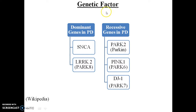In genetic factors, there are two types: dominant genes and recessive genes. Mutations in dominant genes encoding alpha-synuclein and LRRK2 are transmitted in a dominant fashion in Parkinson's disease. The SNCA gene — the discovery of mutations in the SNCA gene was the first evidence of a genetic cause of Parkinson's disease. This gene encodes the protein alpha-synuclein, the main component of the Lewy body. Mutations in the SNCA gene account for about 2% of familial cases, with a mean age of onset of 46 years.